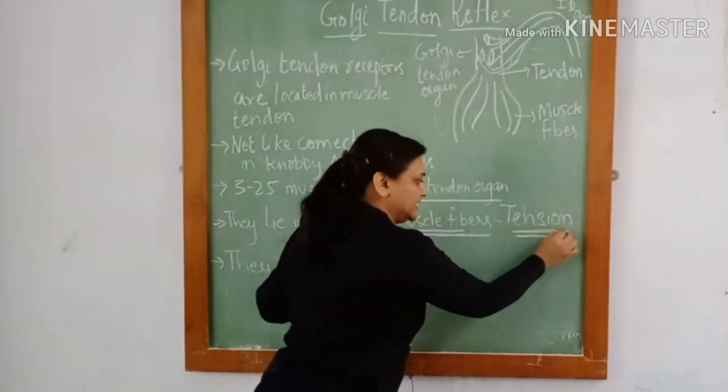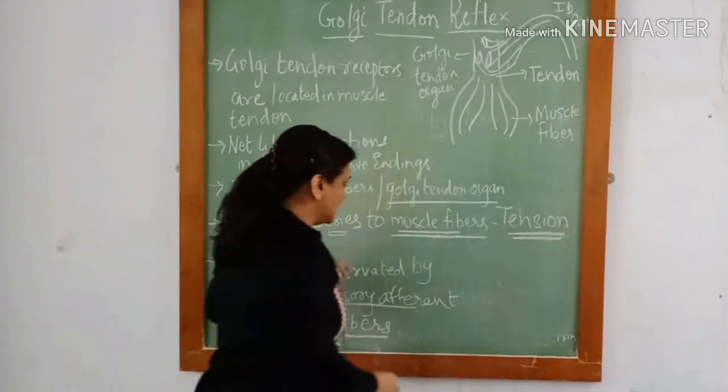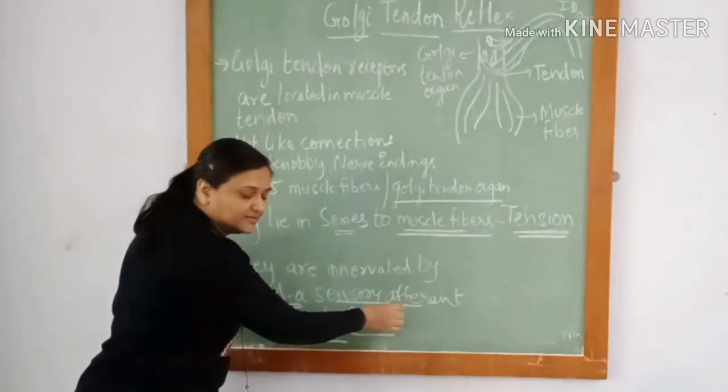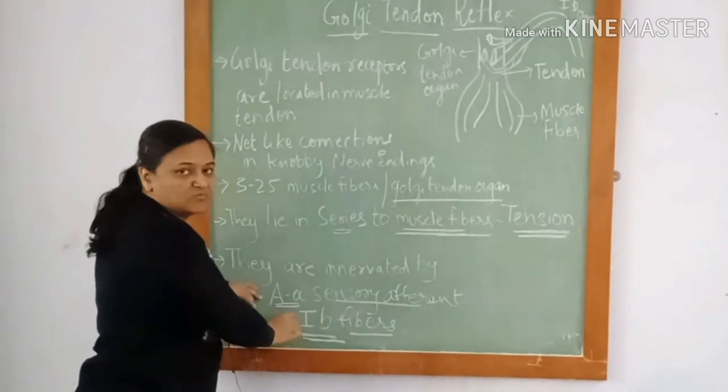Hence, they detect tension. They are innervated by A-alpha sensory afferents, i.e. 1B fibers.